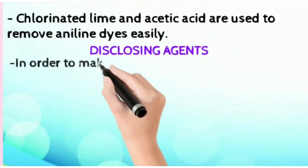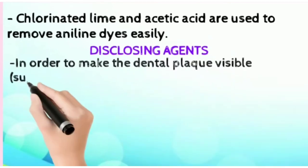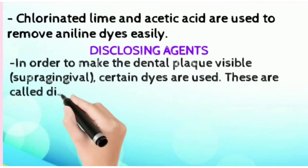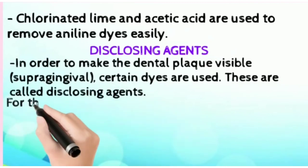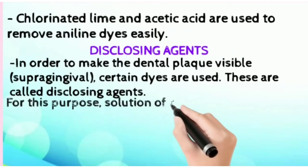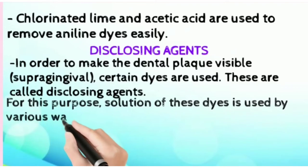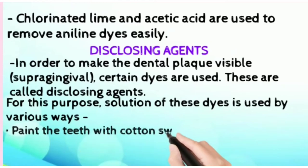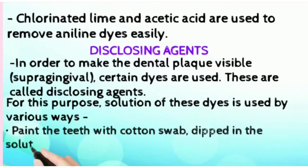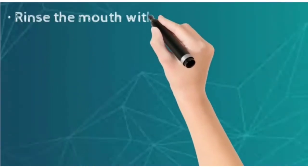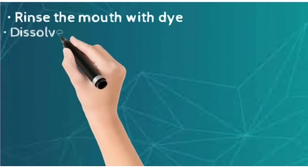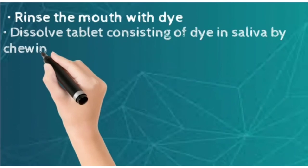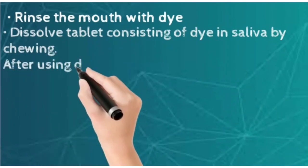What are disclosing agents? In order to make the dental plaque visible, we use certain dyes — these are called disclosing agents. For this purpose, the solution of these dyes is used by various ways: we paint the teeth with a cotton swab dipped in the solution of dye, we rinse the mouth with the dye, or we dissolve a tablet consisting of dye in saliva by chewing. After using the dye, we rinse the mouth with water.